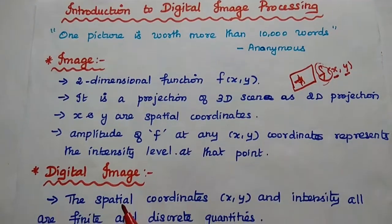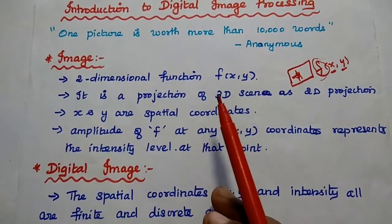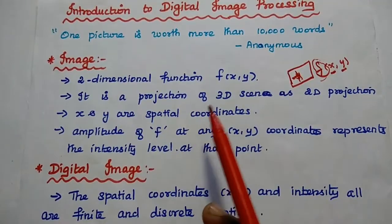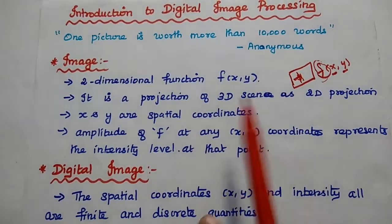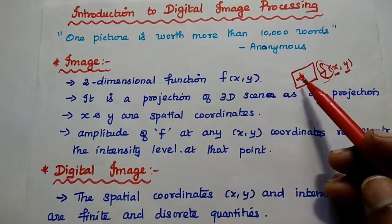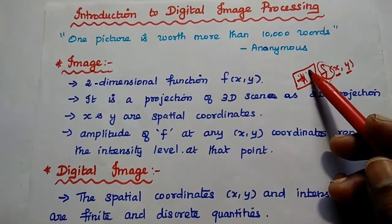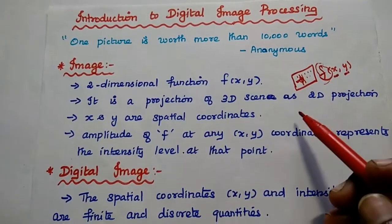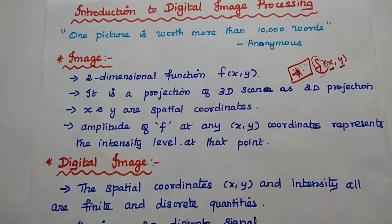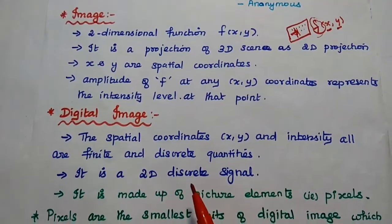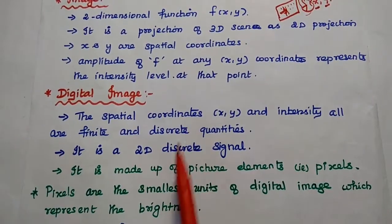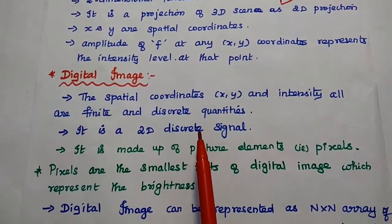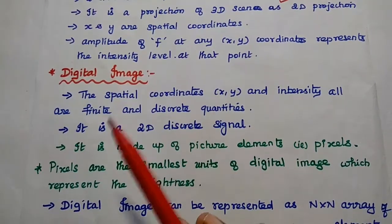So what does this mean by digital image? Here the spatial coordinates of this function — the image is a 2D function represented as f(x, y), where x and y are the spatial coordinates and the amplitude of this function at any point represents the intensity level. Each point in that image has its own brightness value. When the spatial coordinates and intensity levels are all finite and discrete quantities, that is called a digital image.